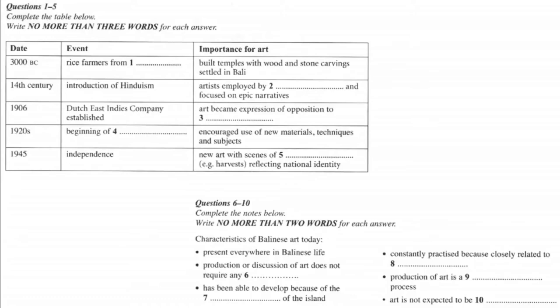I'll begin by giving you a brief historical overview. It's thought that the first inhabitants of Bali were farmers who arrived around 3000 BC, at the beginning of the Iron Age. They probably originally came from China, and in Bali, they cultivated rice and built temples ornamented with wood and stone carvings and statues. The Hindu religion was introduced in the 14th century AD, and this has remained the main religion on the island.